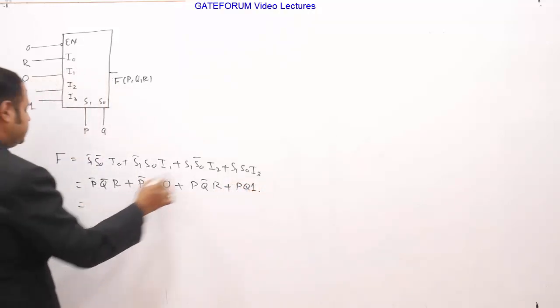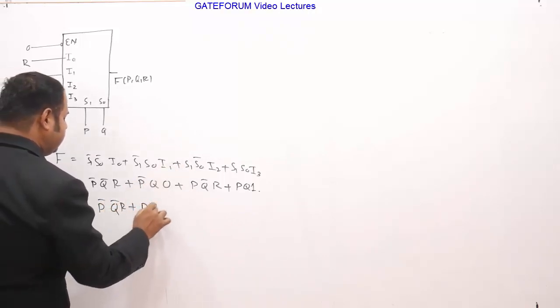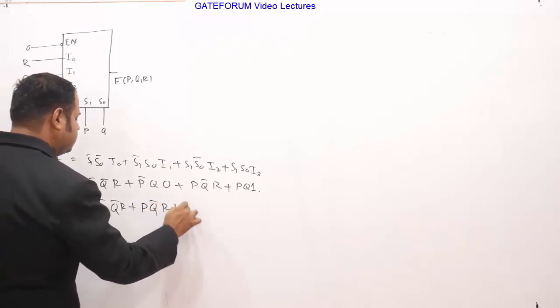So this is anyway 0, so if I simplify this, this is P bar Q bar R, this is anyway 0, then you have PQ bar R, then you have PQ.